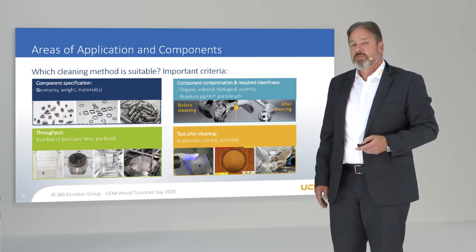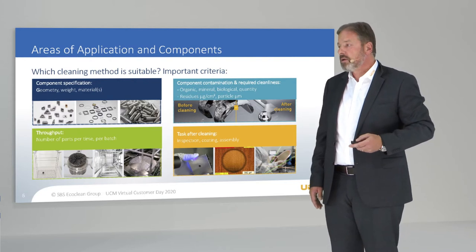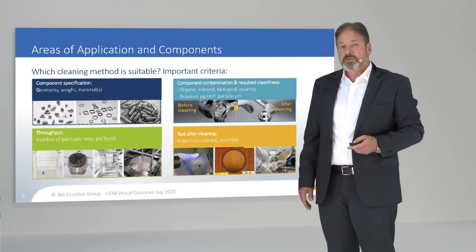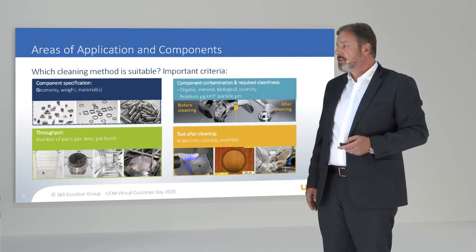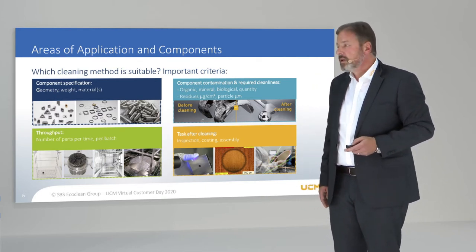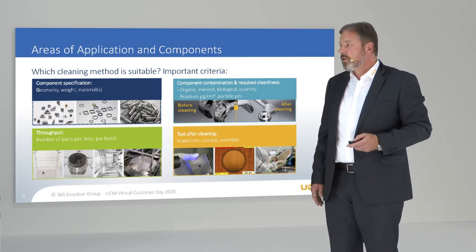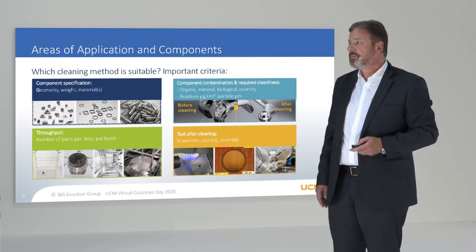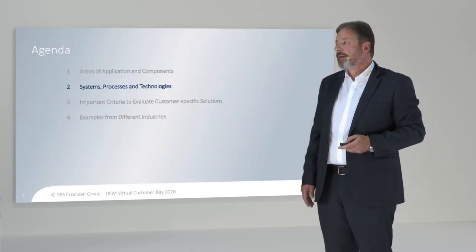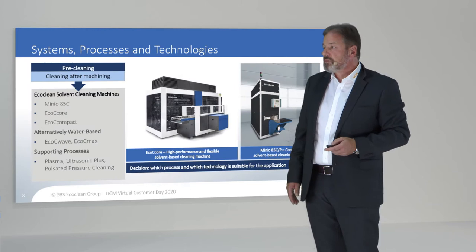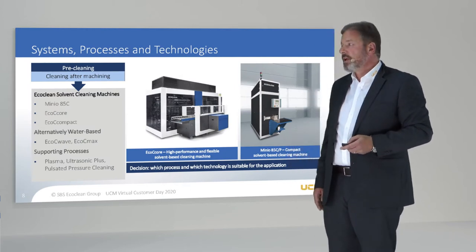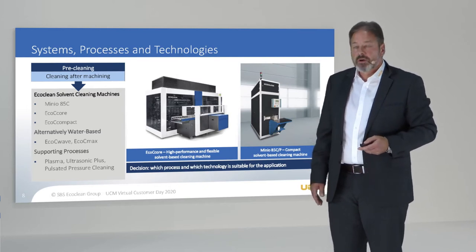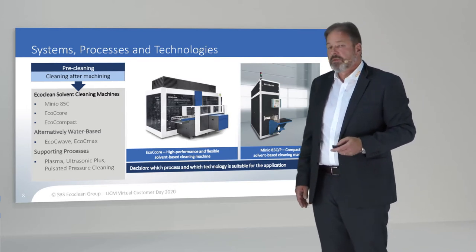Further important is the throughput — how many parts per time or per basket is necessary to know. The task after cleaning also matters: whether you want to inspect, coat, or make an assembly in a clean room area. The systems, processes, and technologies must be evaluated to determine which process and technology is suitable for the application.